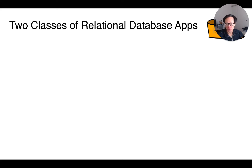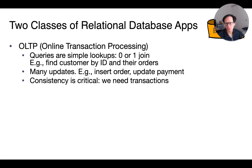In data management, it is customary to organize applications into two broad categories. First, online transaction processing, or OLTP for short. This includes applications that tend to run short transactional queries such as banking transactions, looking up a student record, or customer information. In these applications, it is important to keep ACID properties, and therefore they are also known as transactional applications.